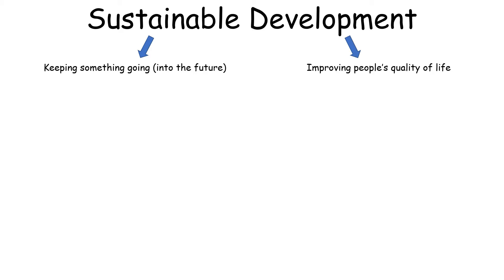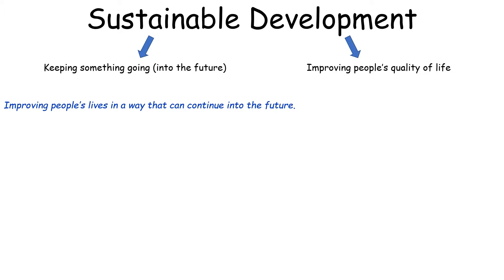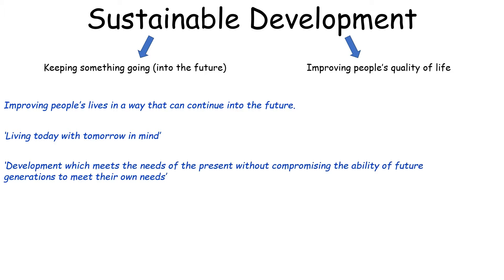Development means improving people's quality of life — it's progress being made. Sustainable development has to be something that can keep going into the future. Some definitions: it's improving people's lives in a way that can continue into the future; living today with tomorrow in mind, trying not to harm the future. A more detailed definition: development which meets the needs of the present without compromising the ability of future generations to meet their own needs.